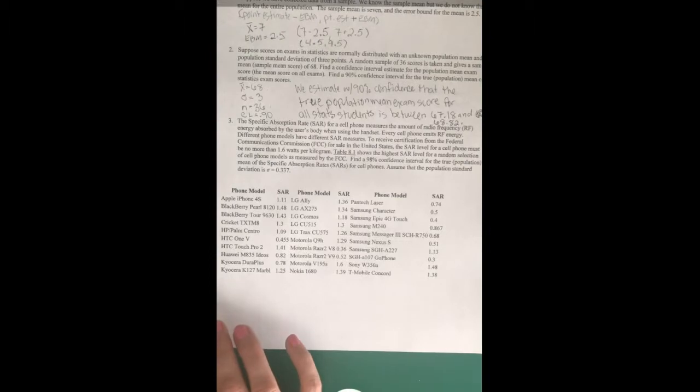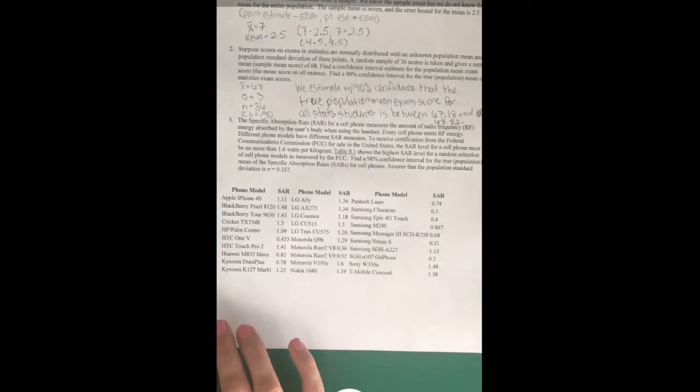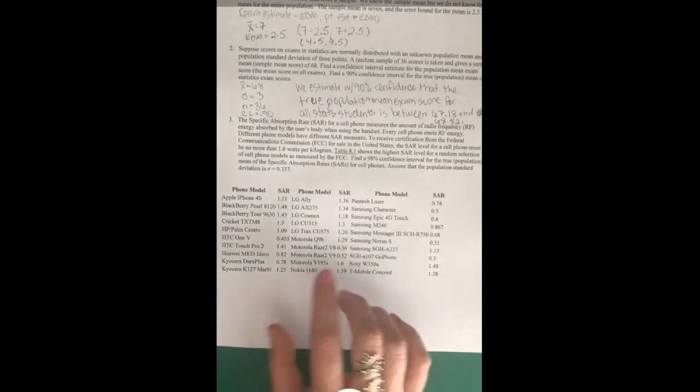Every cell phone emits RF energy. Different phone models have different SAR measures. To receive certification from the FCC for sale in the U.S., the SAR level for a cell phone must be no more than 1.6 watts per kilogram.